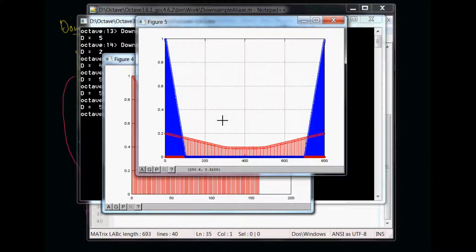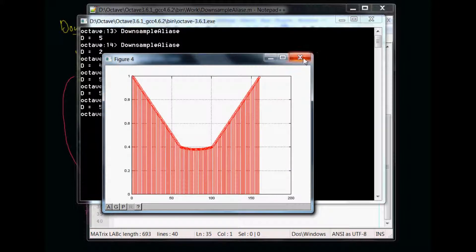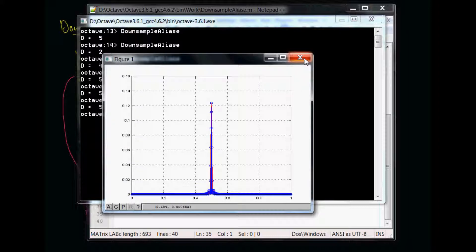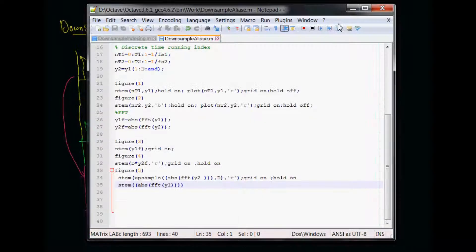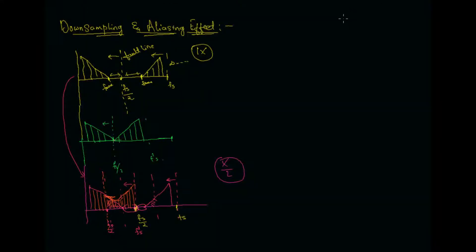I hope the aliasing effect and how aliasing actually occurs is clear. In our next video we'll look into the upsampling part, and we'll also try to derive some analytical equations once we discuss the Fourier transform — because to do the analytical derivation, we need a basic understanding of the Fourier transform. Once we're through that, we'll look at the analytical derivation as well. Hope you've enjoyed these videos, and I'll see you in the next video on upsampling.